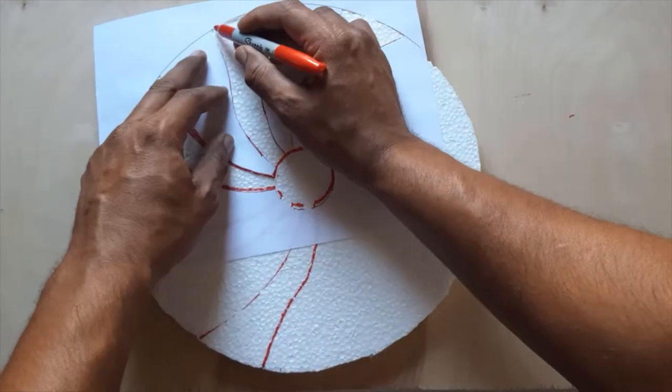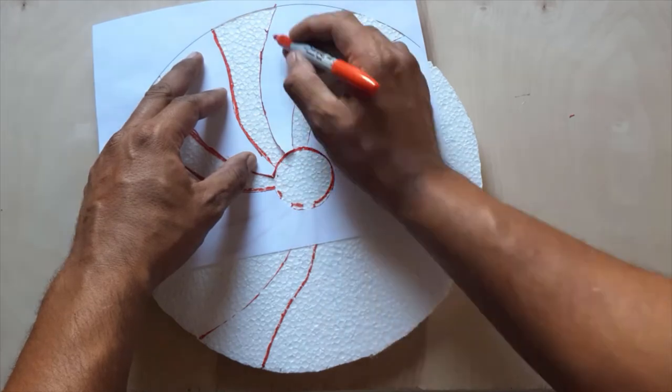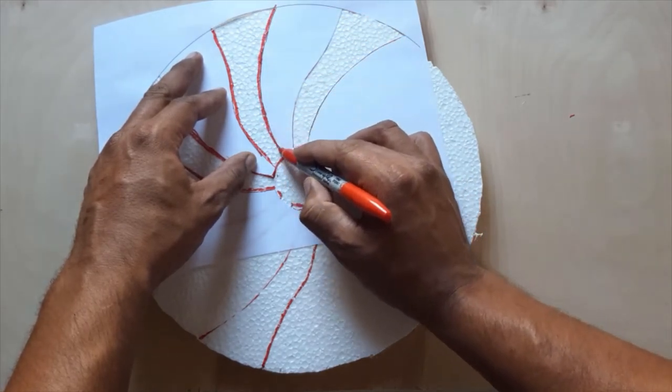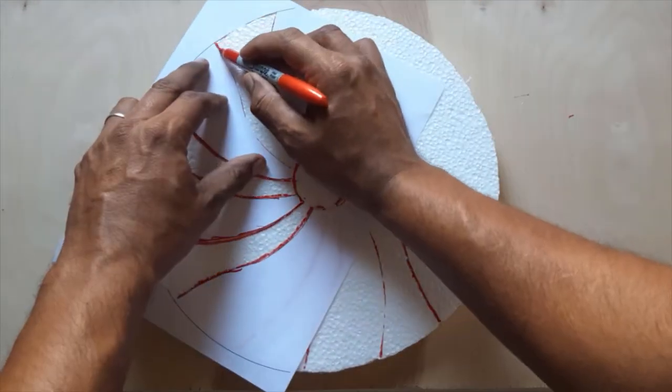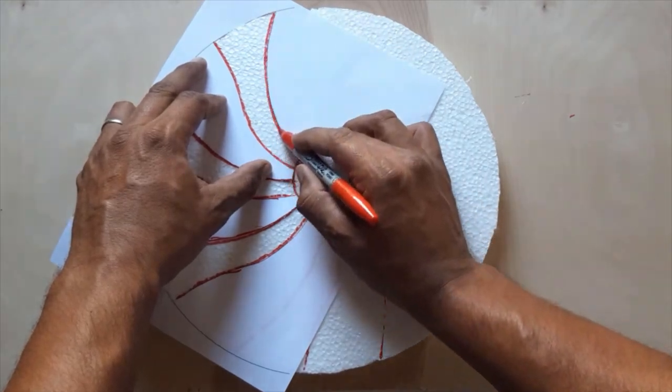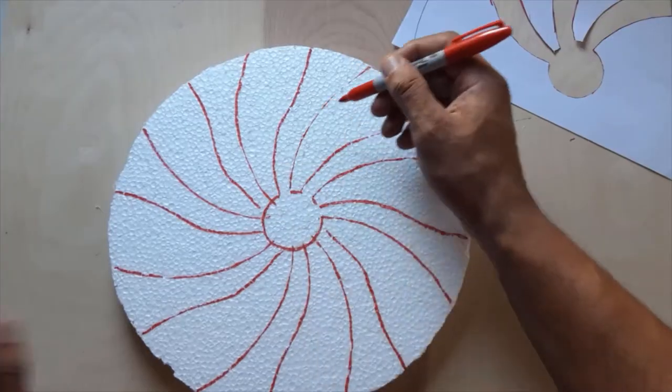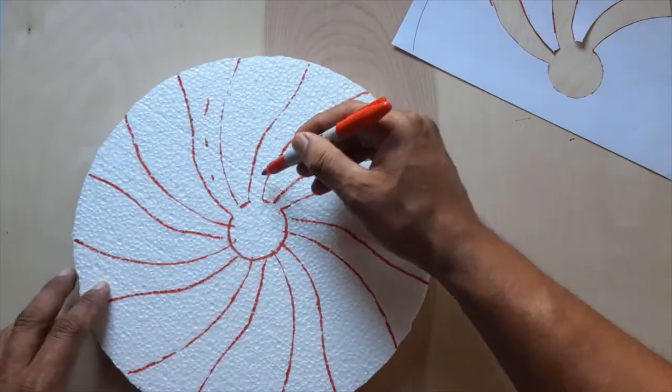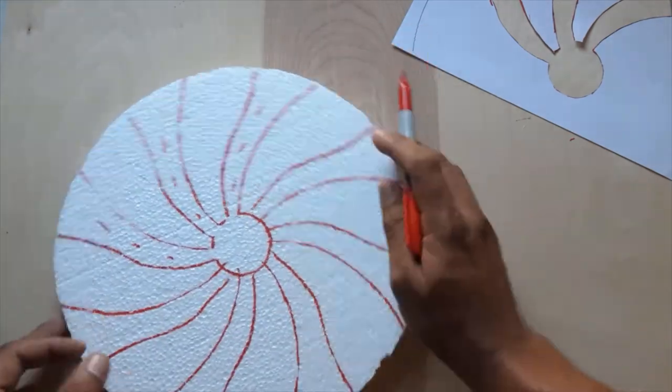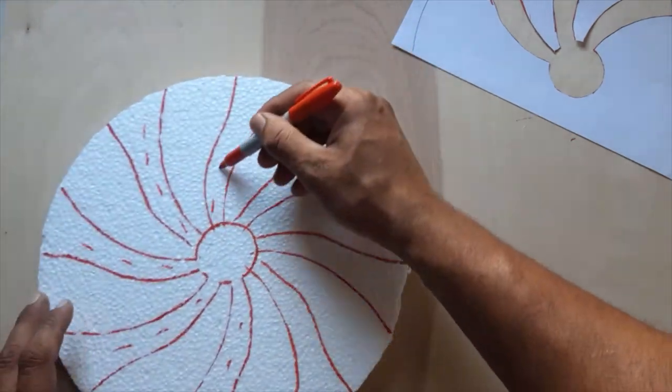Once aligned, continue tracing the rest of the template patterns. Repeat this step until the swirl patterns have been completed. Here's one tip: mark the inside of the areas where paint will go. It is easy to confuse the paint areas if these are not identified.